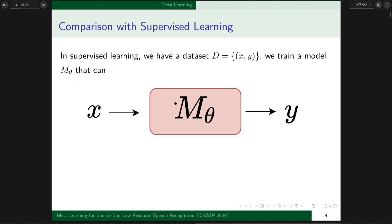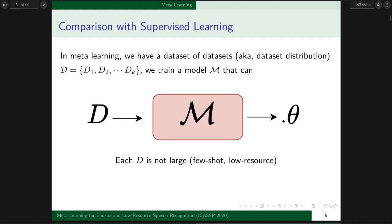Here is a comparison with Meta Learning and Supervised Learning. In Supervised Learning, we have a dataset D containing pairs of X and Y, then we train a model M parameterized by theta that receives X as input and outputs the prediction of Y. In contrast, in Meta Learning, we have a dataset of datasets, D1 to Dk, each Di meaning one dataset.